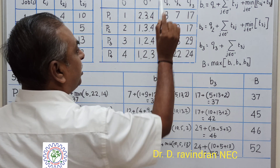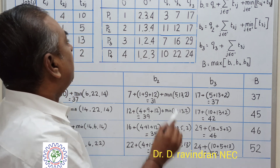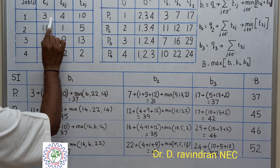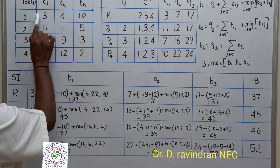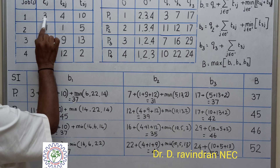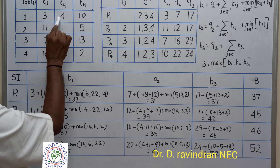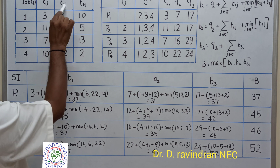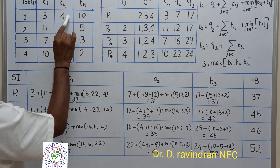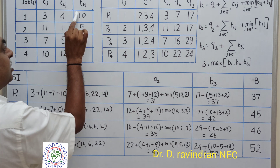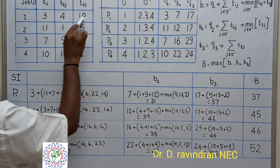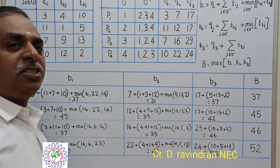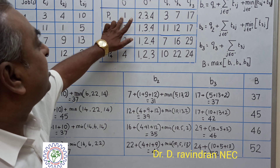Q1, Q2, Q3 represent the completion times when each job is processed first. When the first job is processed, its processing times are 3, 4, and 10. Starting at zero, it exits machine M1 at 3 hours, exits M2 at 7 hours (3+4), then exits M3 at 17 hours (7+10).